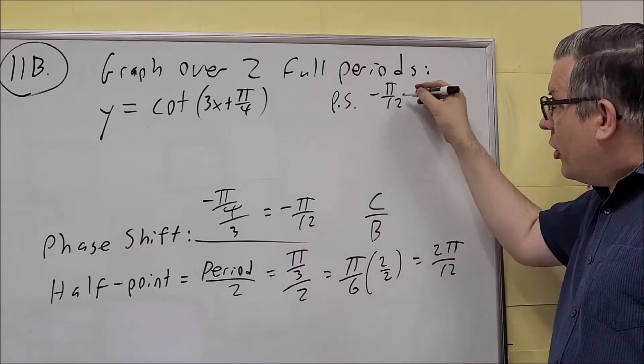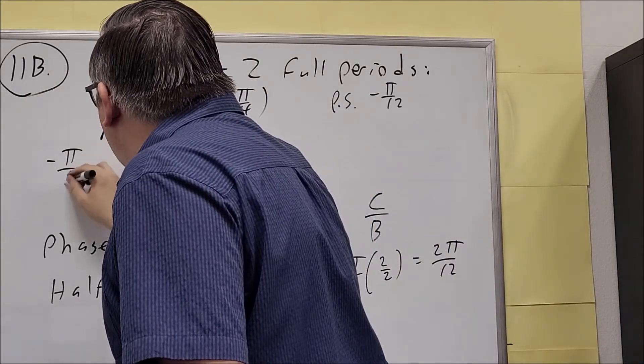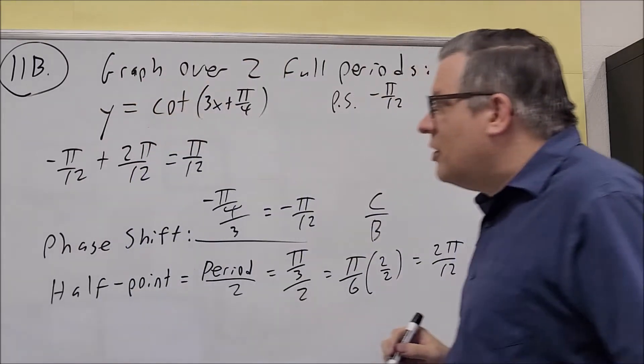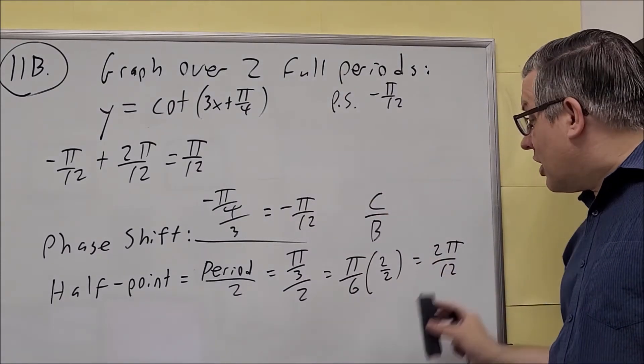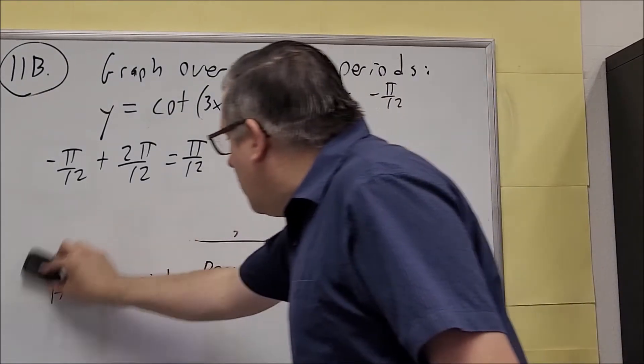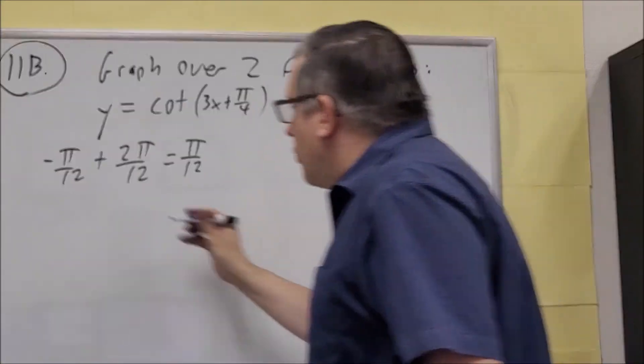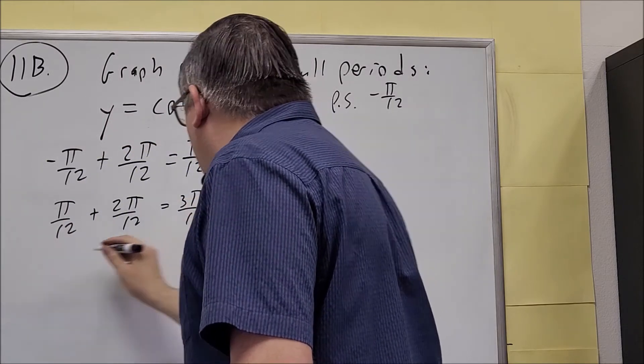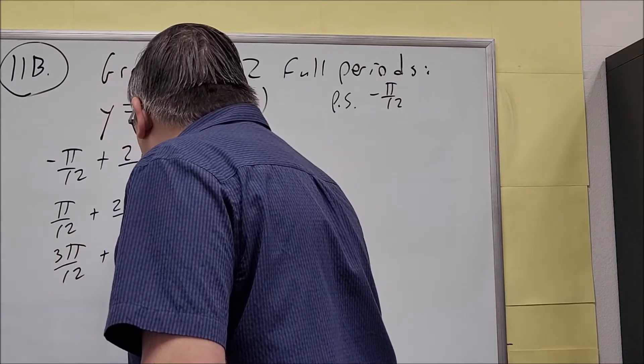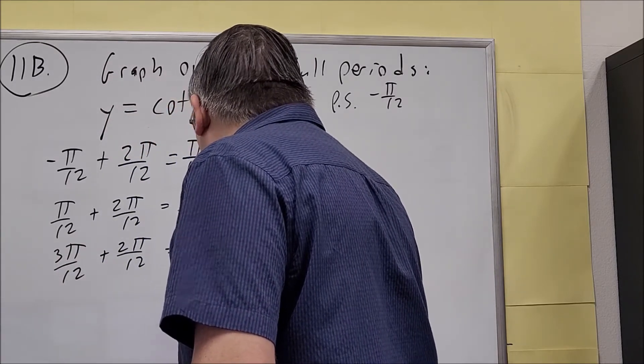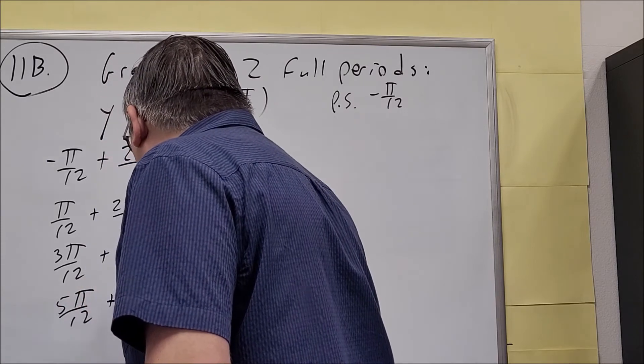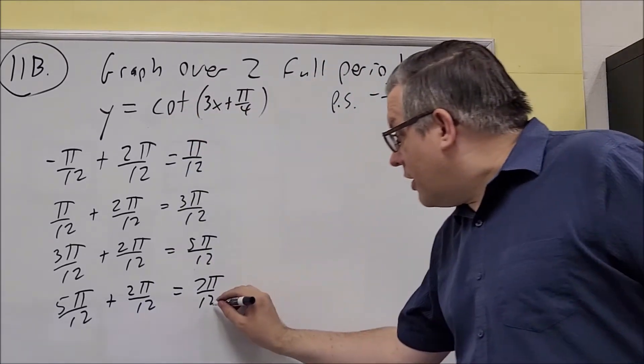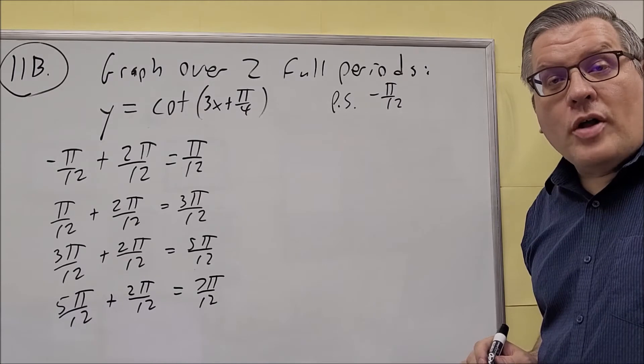So to find the second key point, we get negative π over 12 plus 2π over 12, and we get positive π over 12. So that's going to be your second key point. And now we're just going to keep adding 2π over 12 to get the other ones. So next we're going to do π over 12 plus 2π over 12 is 3π over 12. 3π over 12 plus 2π over 12 is 5π over 12. And then 5π over 12 plus 2π over 12 is 7π over 12. So now these are going to be all of your other key points that we have.